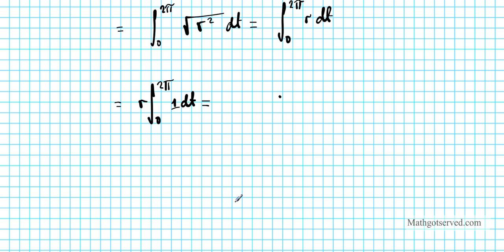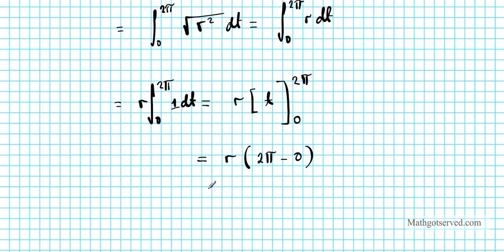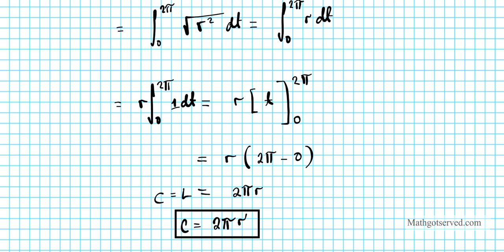Anti-differentiating 1 using the power rule gives r times t evaluated from 0 to 2 pi. Applying the Fundamental Theorem of Calculus part 2, we input the upper limit 2 pi and subtract the lower limit 0, giving r times 2 pi, which equals 2 pi r. So L equals C, and this shows using parametric equations that the circumference of the circle is 2 pi r — the basic formula from geometry, arrived at using the tools of calculus.